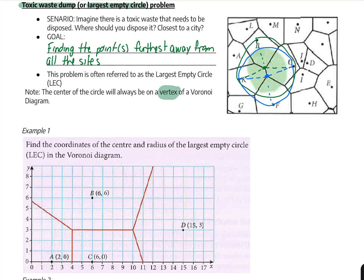Let's look at some examples to make sense of this. Example 1: find the coordinates of the center and radius of the largest empty circle in this Voronoi diagram. This Voronoi diagram is created by having four sites, and therefore we have two vertices. My first vertex V1 is created by the sites A, C, and B — all of equal distance — and V1 is at the coordinates (4, 3).